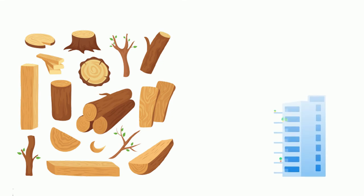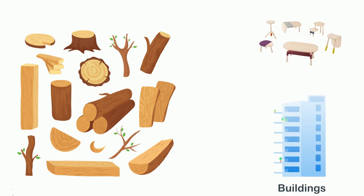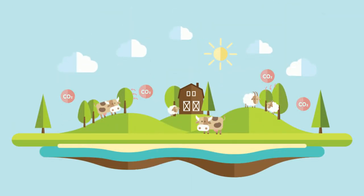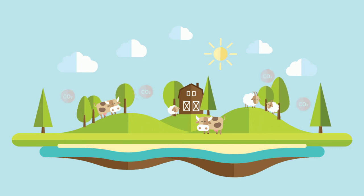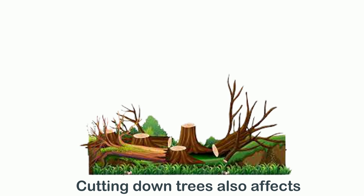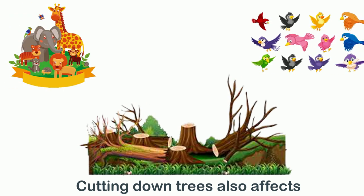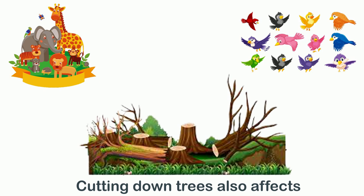Similarly, when forests are cut down for making buildings or to get wood for furniture and other things, it leads to more polluted air and water, because trees absorb carbon dioxide which is harmful for living things and release oxygen which is needed by living things. Cutting down trees also affects animals and birds because they live in the trees and get their food from them.